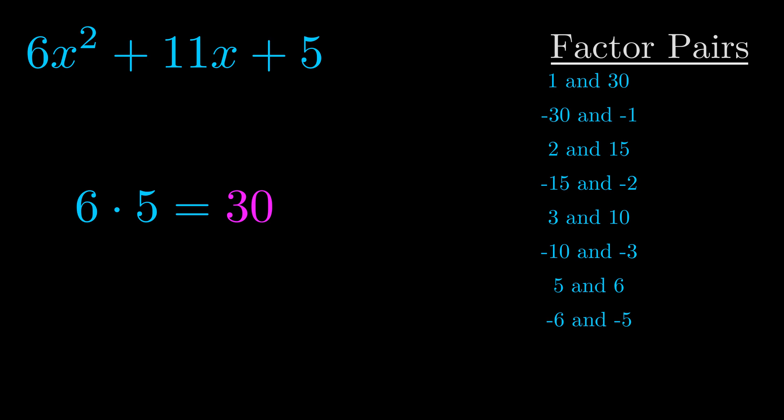The b value is the coefficient on the x term. That's the middle term, the one that we haven't done anything with yet. And really this is the only factor pair that we need.